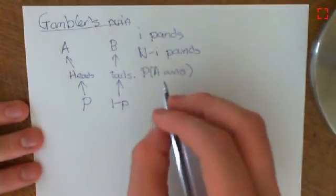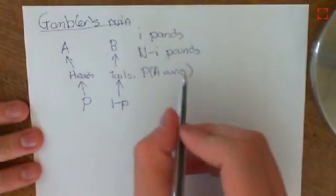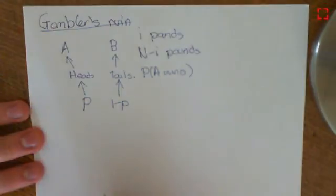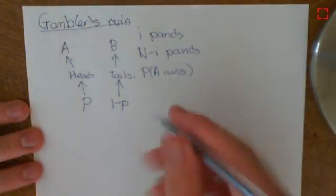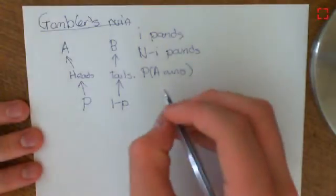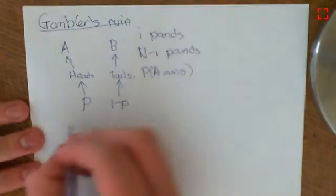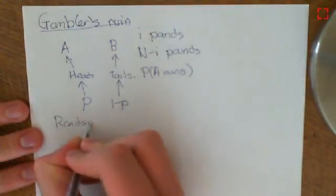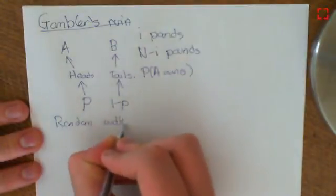So, we want to know the probability A wins. And it's completely and utterly entangled with another problem, which is the problem of a random walk. So it's exactly the same problem, in effect — a random walk.